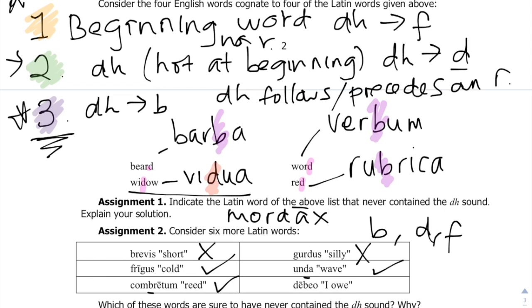The last word is 'debeo', which has both a d and a b. Looking at the d: it's at the beginning of the word, so by rule one it should have become an f — not a d. So the d doesn't work. Looking at the b: it has two e's at either side, not an r, so it doesn't fit rule three either. Therefore 'debeo' could not have contained the 'dh' sound in ancient times. That completes problem number three.